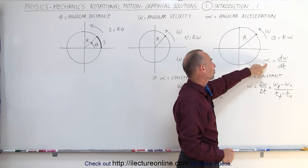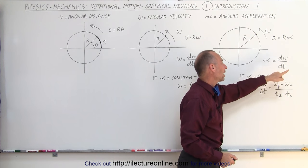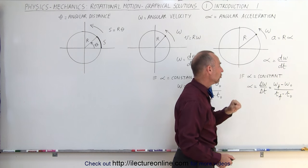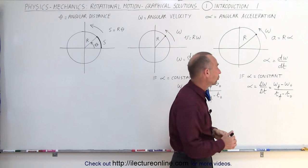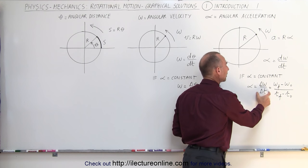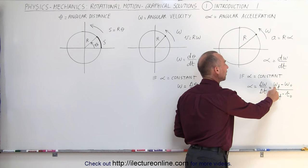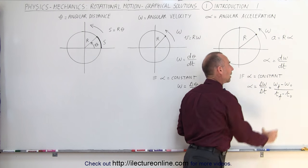The definition of angular acceleration, alpha, is defined as the change in omega over time. That would be the instantaneous angular acceleration. Or if the acceleration is constant, we can write in terms of the change in omega, the change in the angular velocity divided by the change in time, or the final angular velocity minus the initial angular velocity divided by the elapsed time.